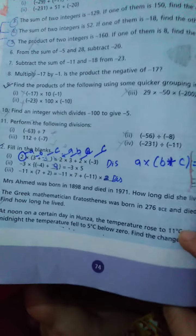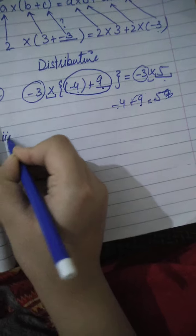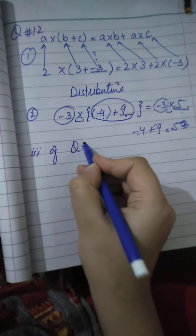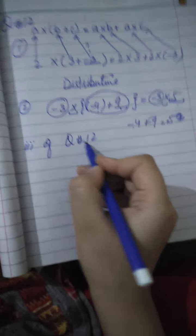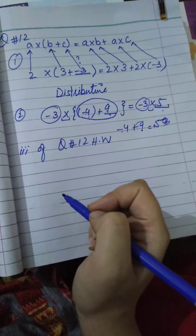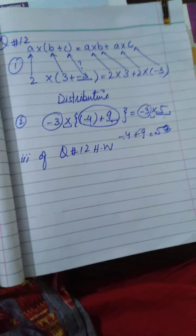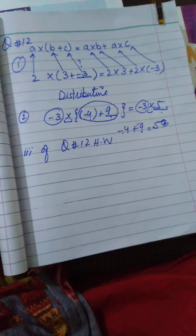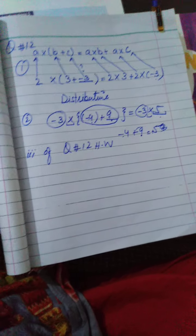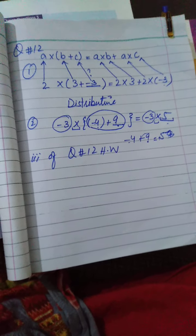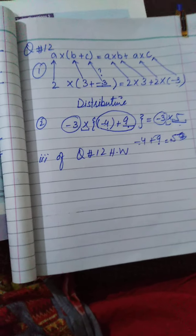Now move to the next blank — it's your homework. Blank number 3 of question number 12 is homework; it will be similar to blank number 1, so try it by yourself. If you find any problem related to our lecture, you can ask me. Best of luck students. Allah Hafiz.